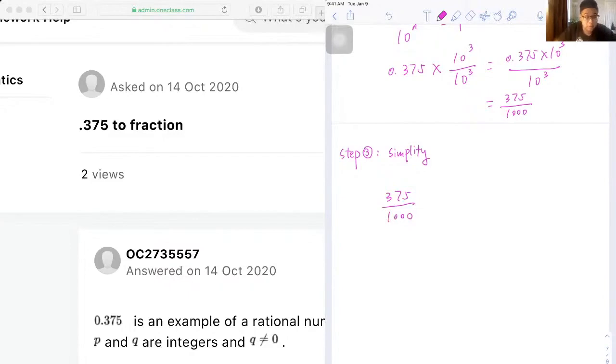And we know that both numerator and denominator either end in five or end with a zero, so that means it can at least divide by five. So let's do that. So 375 divided by 5 is 75, and a thousand divided by 5 is just 200.